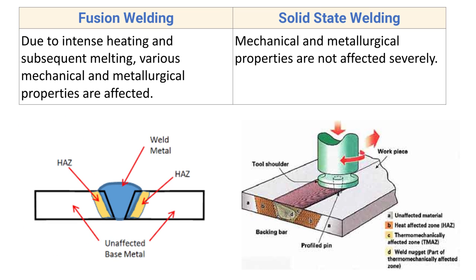Next point: due to intense heating and subsequent melting in fusion welding, various mechanical and metallurgical properties are affected. The melting of the base component changes its properties and affects the metallurgical and mechanical properties of the overall component. In solid state welding, no melting takes place, and therefore the mechanical and metallurgical properties of the base component are not affected severely.